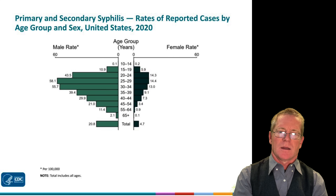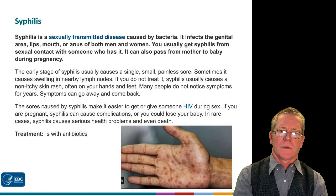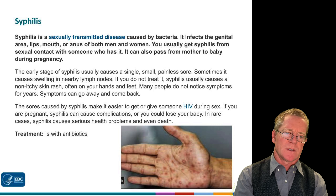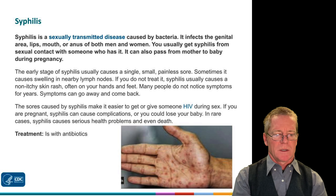Syphilis rates are high in the 20-through-30 age group and are higher in men. Syphilis is caused by a bacterium and produces small, painless sores, sometimes with lymph node swelling. It can remain fairly dormant for a number of years but can become much worse over time. You can see here a person suffering from syphilis showing spots on their hand. It is treatable with antibiotics, and talking to previous sexual partners is essential to stop the spread.